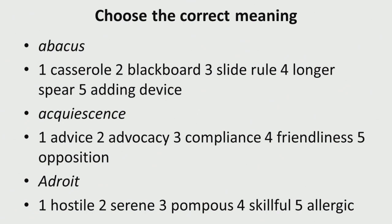The first word is 'abacus.' You are given five choices: casserole, blackboard, slide rule, longer spear, and adding device. The second word is 'acquiescence' — choices are advice, advocacy, compliance, friendliness, opposition.